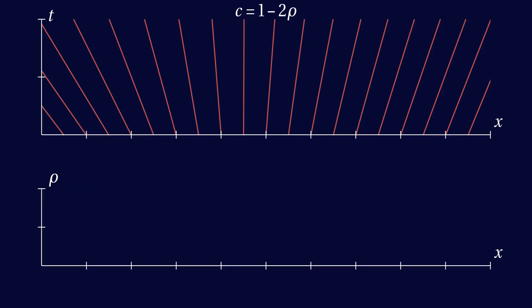Suppose we want to reconstruct the plot of density at a certain time. First, we draw the horizontal line corresponding to this time in the spacetime plot. Then, for each x-coordinate, we look at the slope c of the characteristic intersecting our line at that x, and from its slope, we know the density. Sloping backwards means high density, sloping forwards means low density. This way, we can read off the density profile at a certain time from the plot of the characteristics.